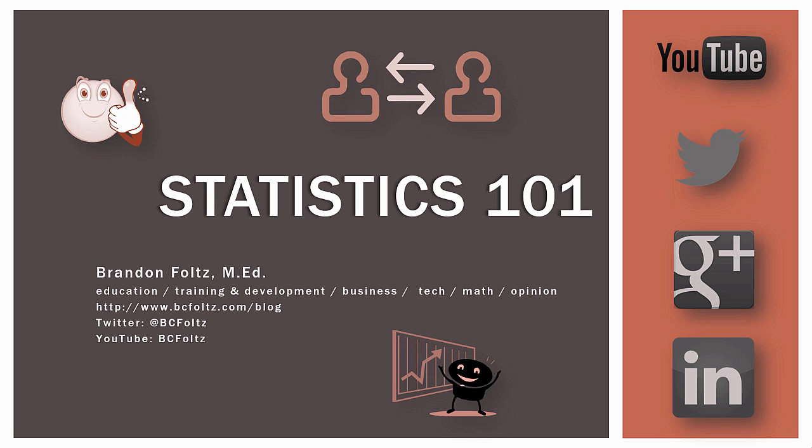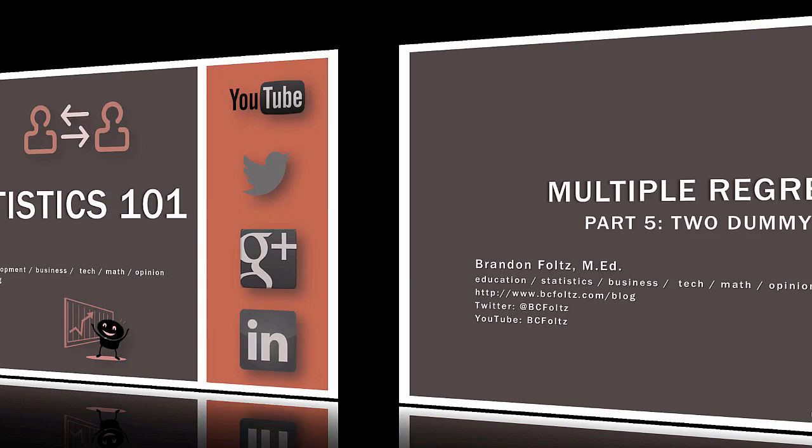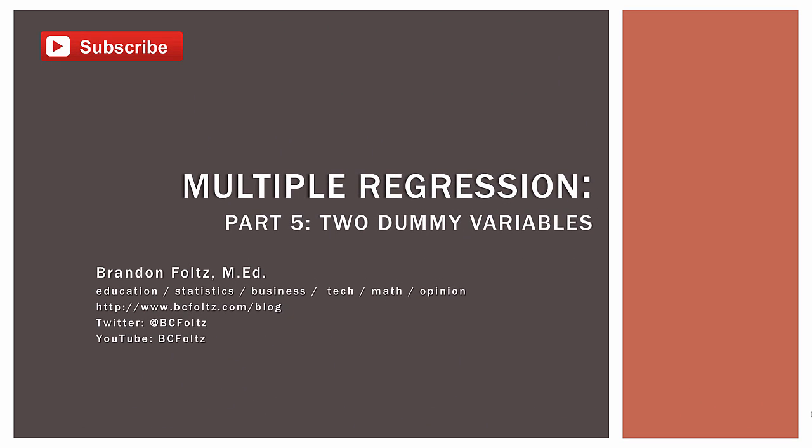So let's go ahead and start learning. This video is the next in our series about multiple regression — it's really an extension of part four. In part four, we looked at the case where we had one dummy variable. In this video, we're going to extend that to two dummy variables. We will see how to set up the problem, how to conduct the analysis, and then interpret our results. If you did not watch part four, I highly recommend going back and watching it before proceeding with this one.